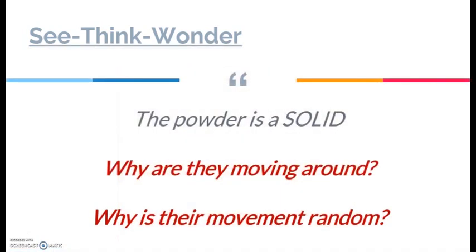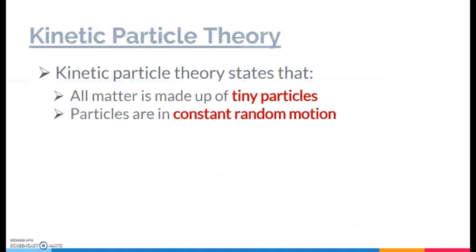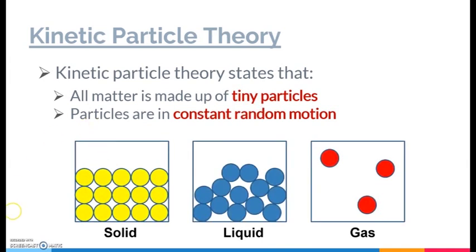Why is their movement random? This actually serves as very important evidence of the kinetic particle theory, showing us that in reality all matter is made up of tiny particles and these particles are always in constant, random motion. By particles, I'm referring to the particles you learned in lower secondary school in terms of all these structures — all these circular structures are the so-called particles themselves.